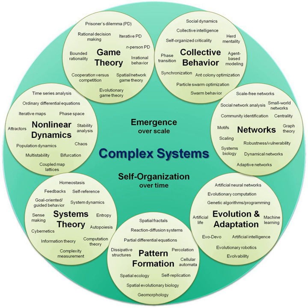The goal of systems theory is systematically discovering a system's dynamics, constraints, conditions and elucidating principles — purpose, measure, methods, tools, etc. — that can be discerned and applied to systems at every level of nesting, and in every field for achieving optimized equifinality. General systems theory is about broadly applicable concepts and principles, as opposed to concepts and principles applicable to one domain of knowledge.